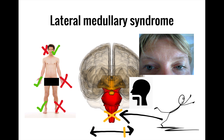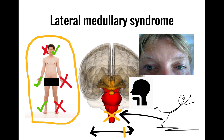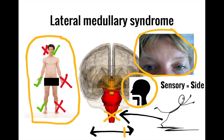Our first clue that this is in the brainstem is the crossed findings. Looking at cranial nerves to determine the level, the presence of swallowing and speech difficulties strongly suggests involvement of the glossopharyngeal and vagus nerves — the 9th and 10th cranial nerves — which exit from the medulla. To determine medial versus lateral, the spinothalamic tract, sympathetic nervous system with ipsilateral Horner's, and the spinocerebellar pathway with ataxia, vertigo, and nystagmus all indicate involvement of the lateral medulla.